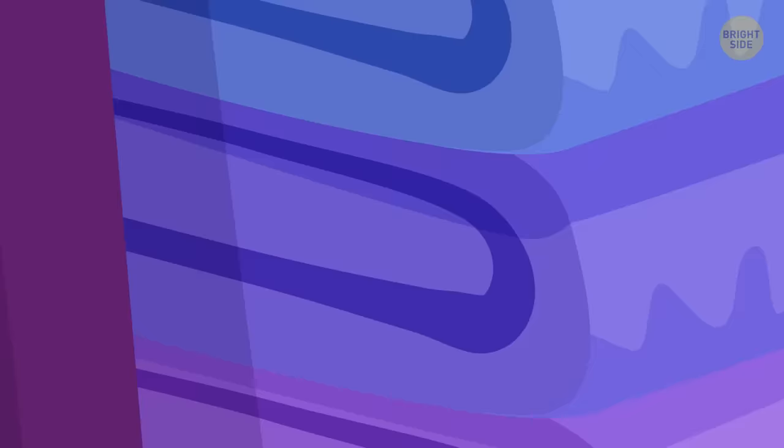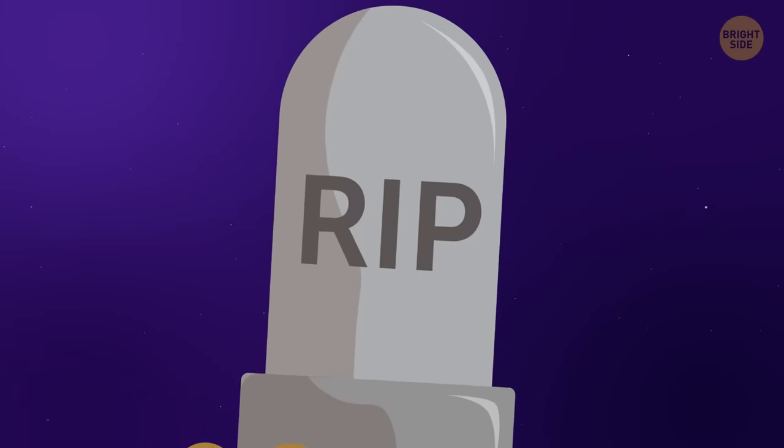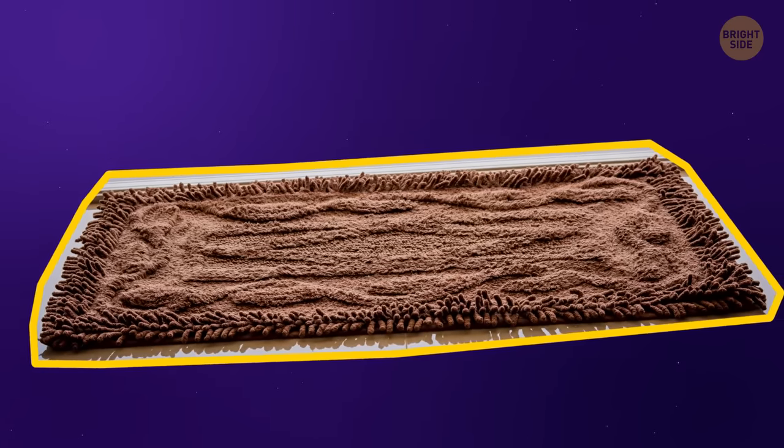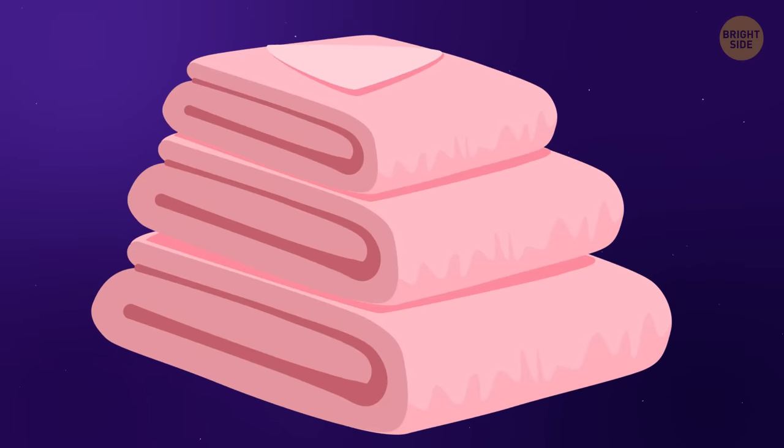Number 30: Old towels. If your bathroom towels begin to feel like cardboard boxes, this is a sign that they've reached their lifespan. You can repurpose them into a bathroom rug, or you can donate them to an animal shelter and get yourself new ones.